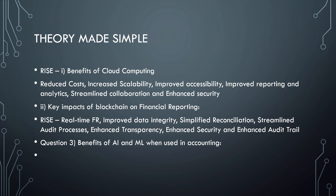RISE is also used for another topic: key impacts of blockchain on financial reporting. Here, R is for Real-time financial reporting. I for Improved data integrity. S for Simplified reconciliation and Streamlined audit process — streamlined CA, where CA means Collaboration and Audit process. E for Enhanced transparency, and another E for Enhanced audit trail. So benefits of cloud computing and benefits of blockchain on financial reporting — within one minute you have risen up, that is, RISE.